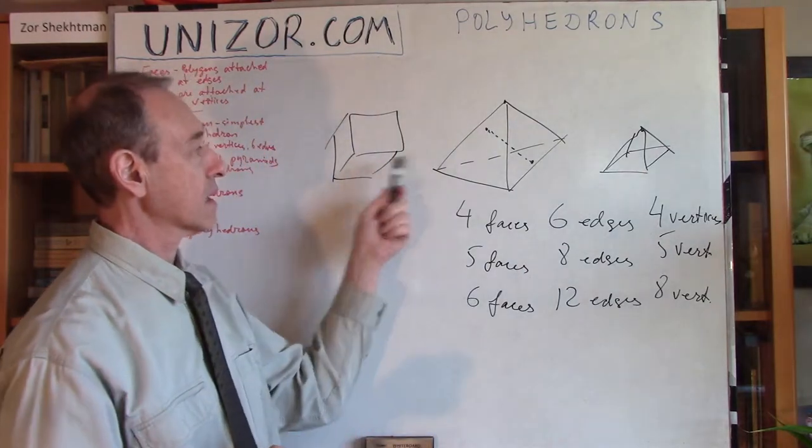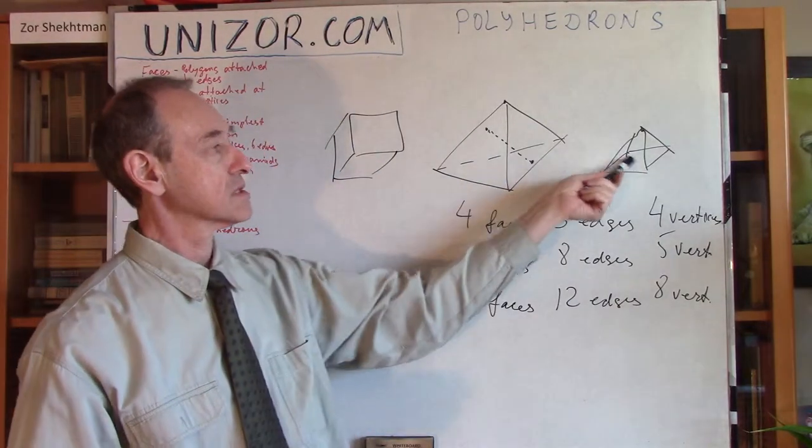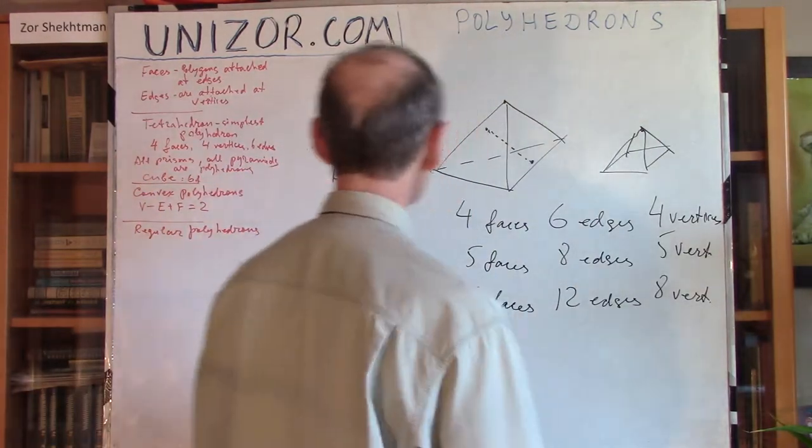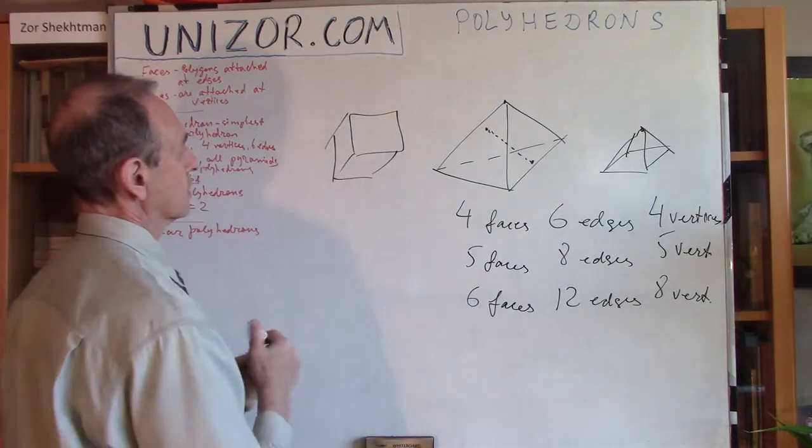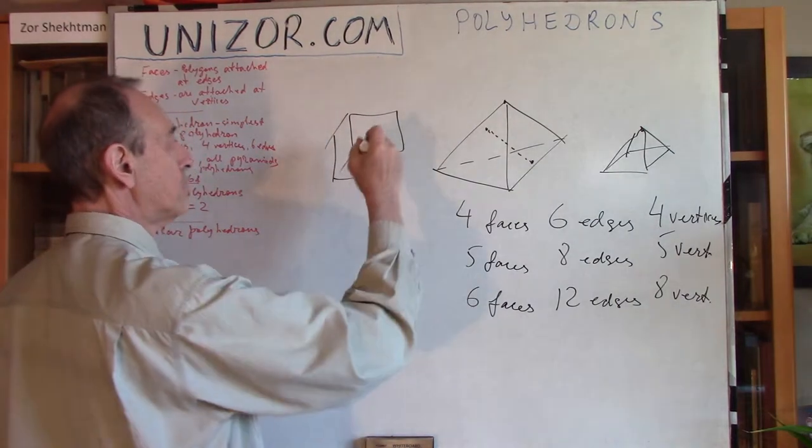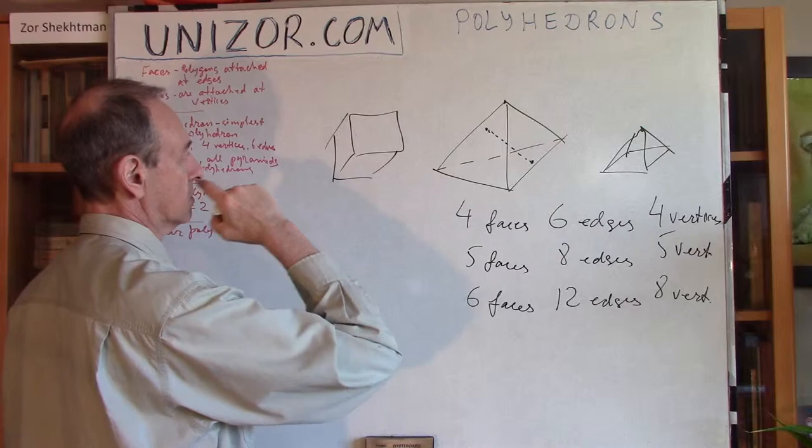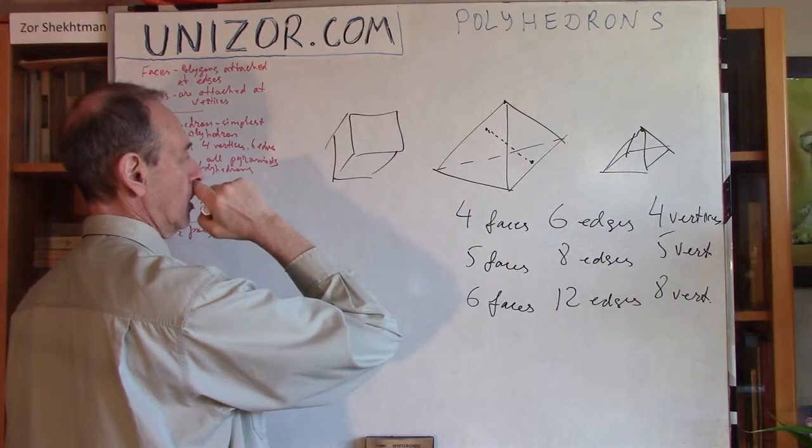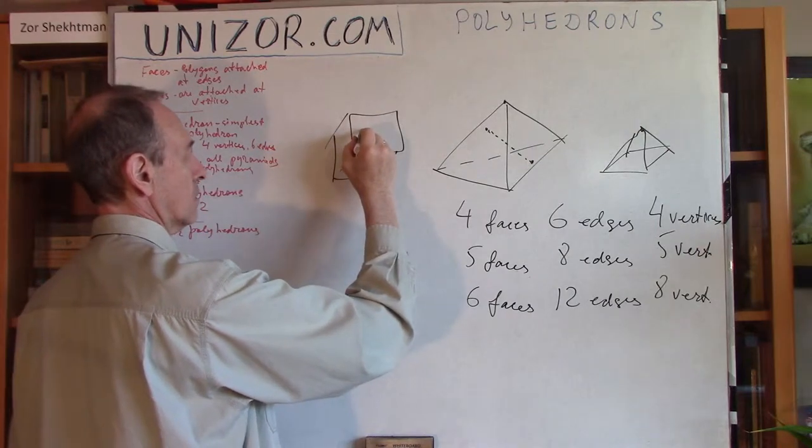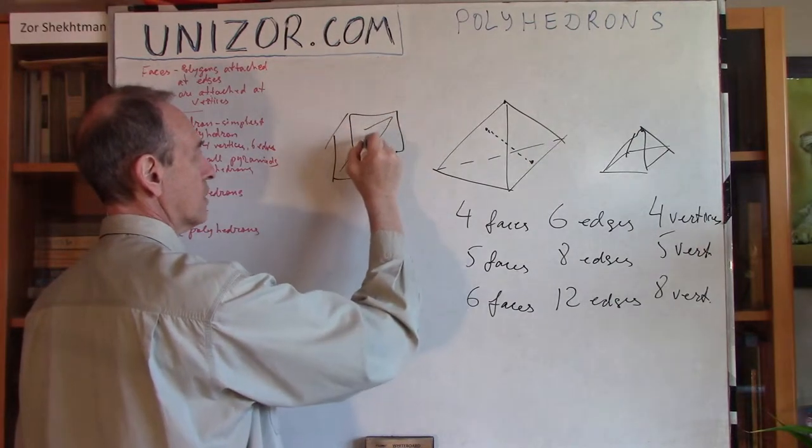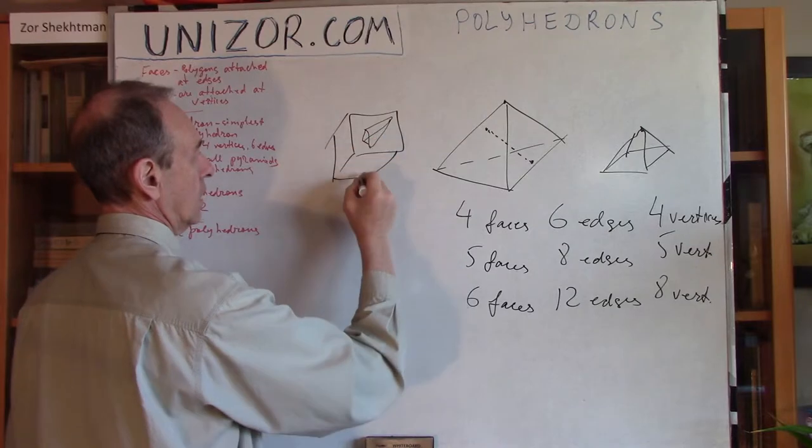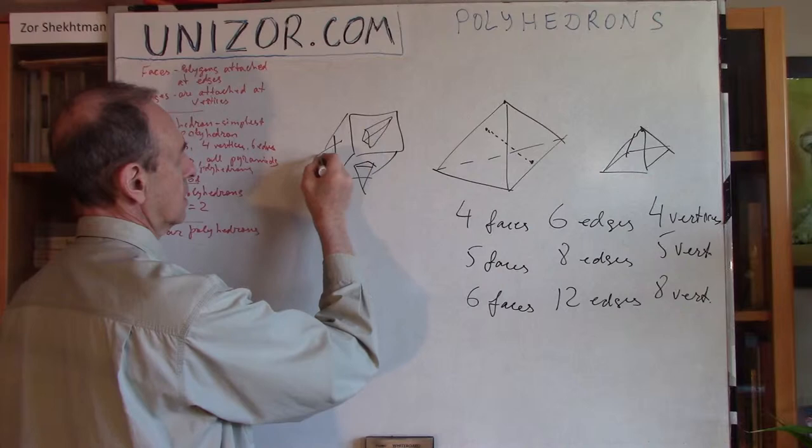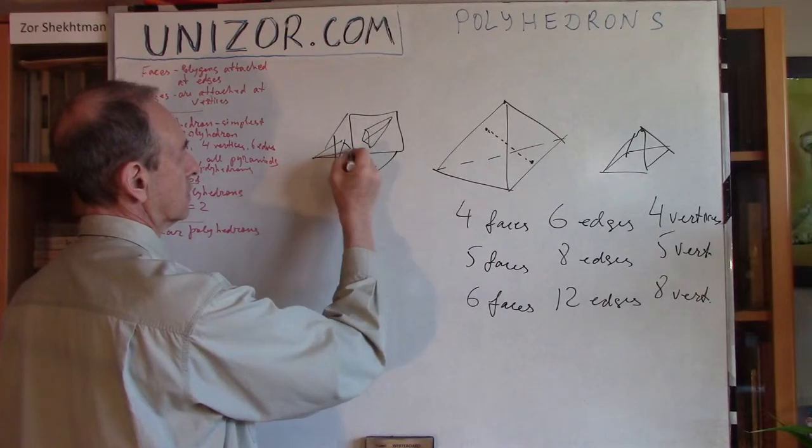Now, cube is convex. Such a pyramid is also convex. But you can always imagine something which is not convex. Let's say you have this cube, and I will build certain pyramids on each face. Something like this would be a pyramid, and on this I will build another pyramid, and on this I will build another pyramid.